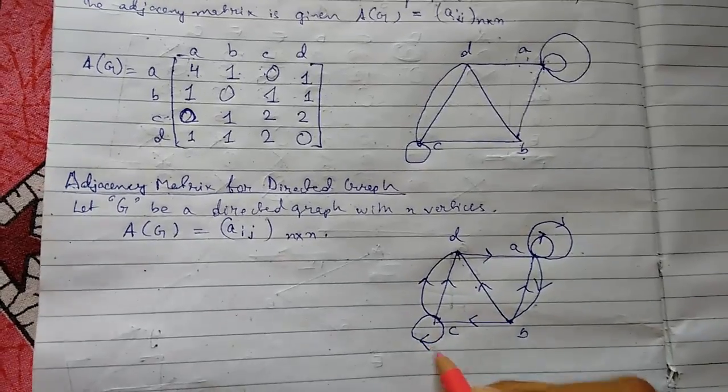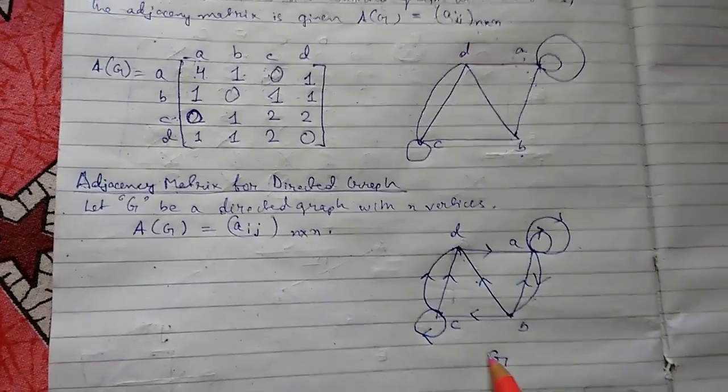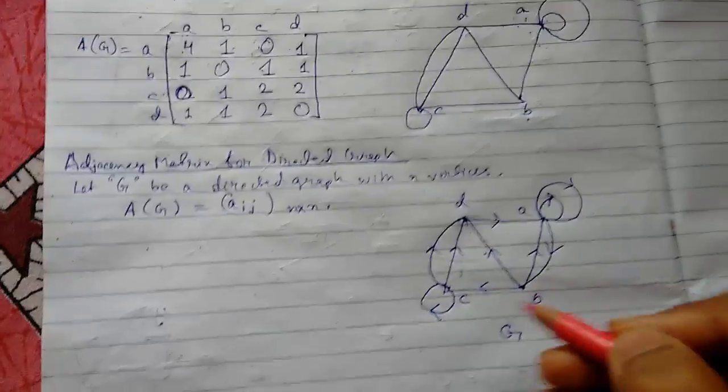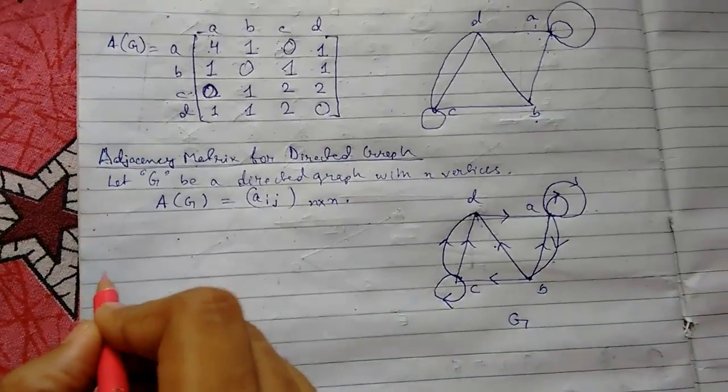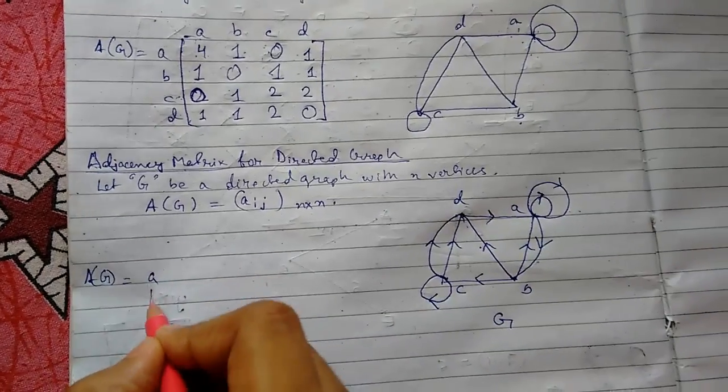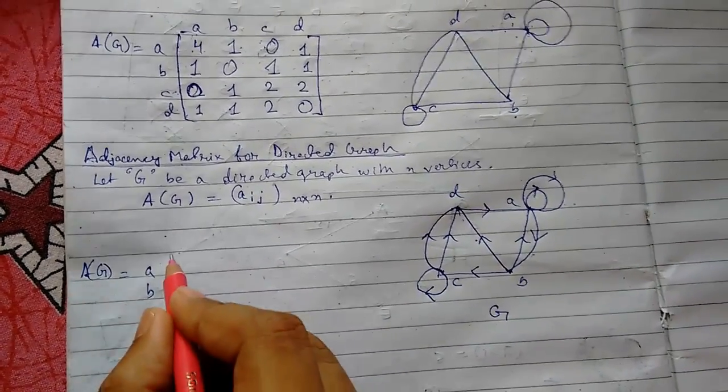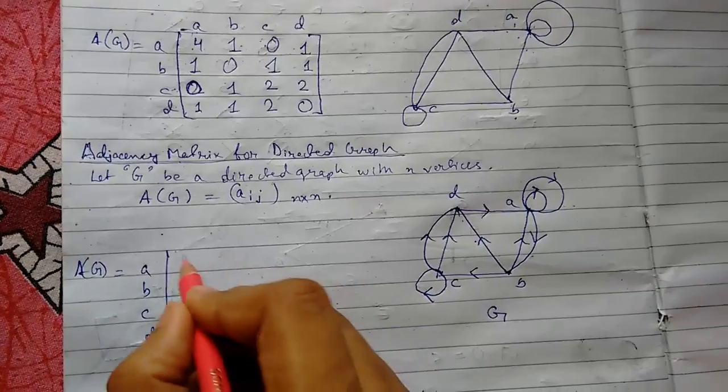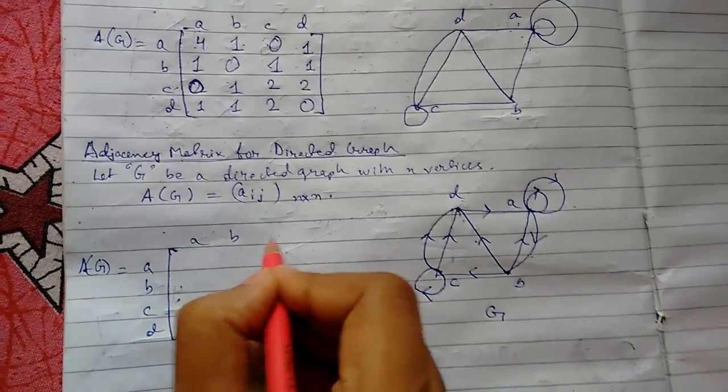So again we will see the paths. Now here today we will consider the direction also. So let me write what I am meaning about: a, b, c, d.